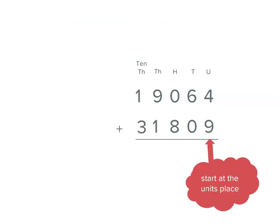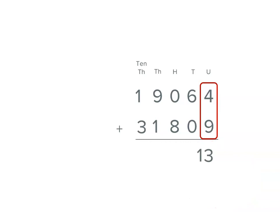Now we always start adding from the right hand side, as far right as we've got, and in this case, it's the units place. 4 plus 9, or 9 plus 4. Well, 9 and 1 is 10, and then we've got 3 more. So when we add 4 and 9, we actually get 13.